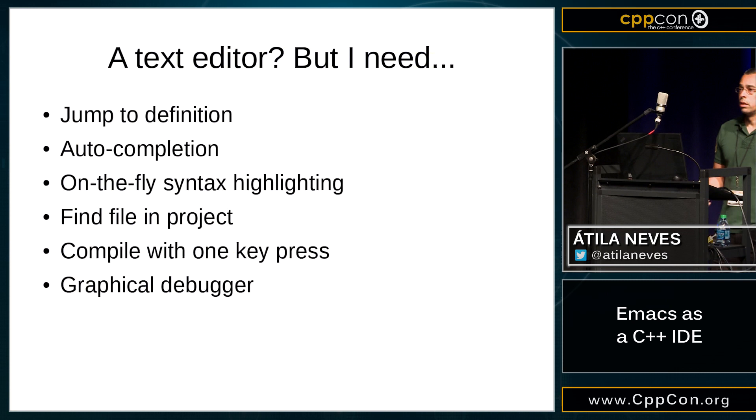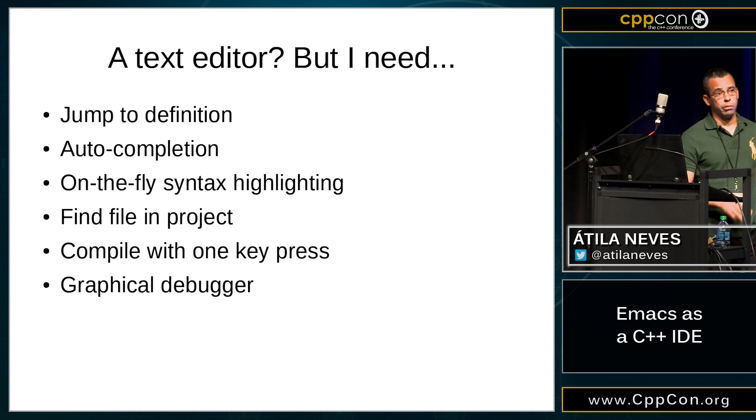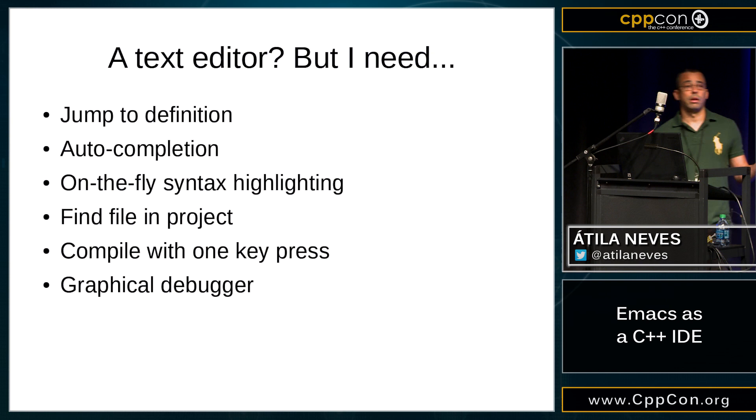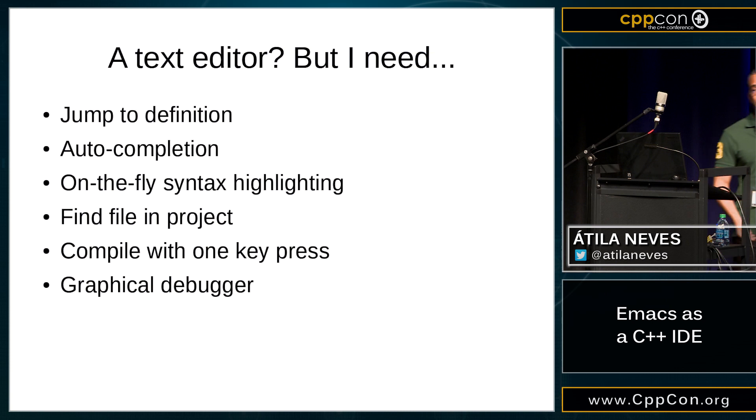Auto-completion saves a lot of time. If you don't know the API that well, you can hit dot, things pop up, and you can fumble your way around. On-the-fly syntax highlighting means that when you're typing your code, you don't wait for it to compile — things are happening in the background. You get a squiggly line; it'll tell you what you're doing wrong, and maybe some static analysis going on there.